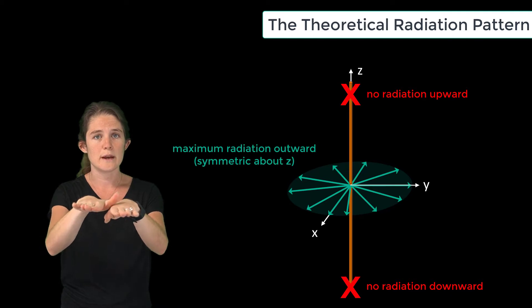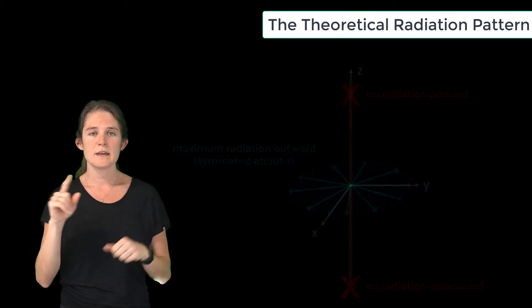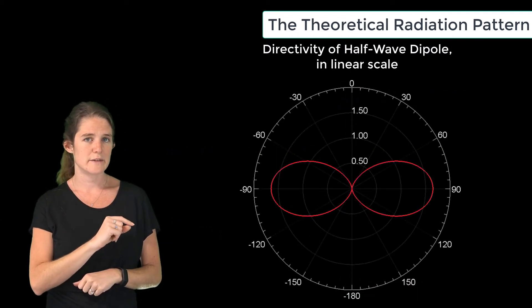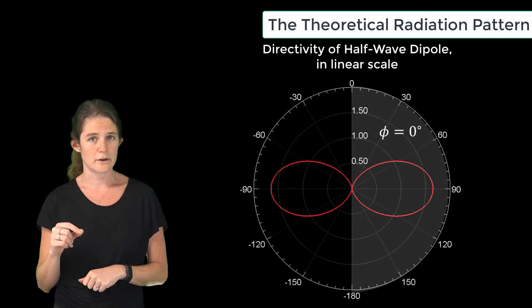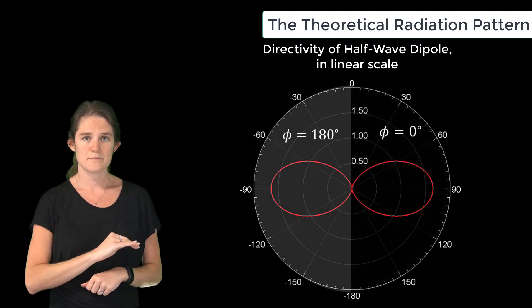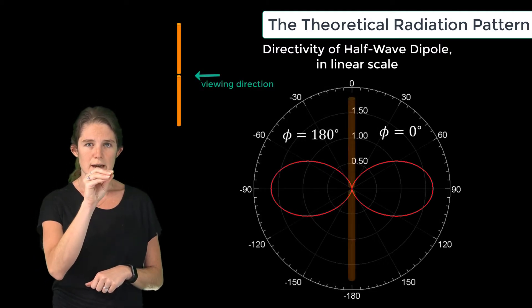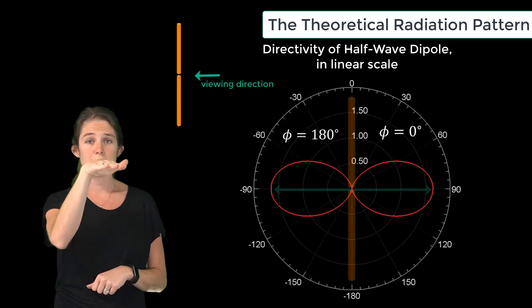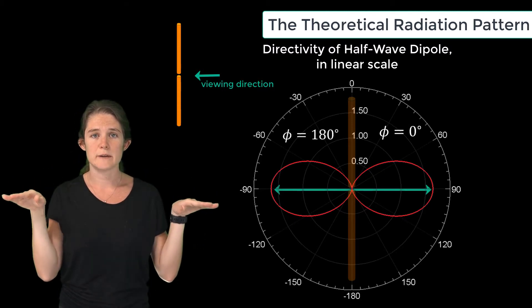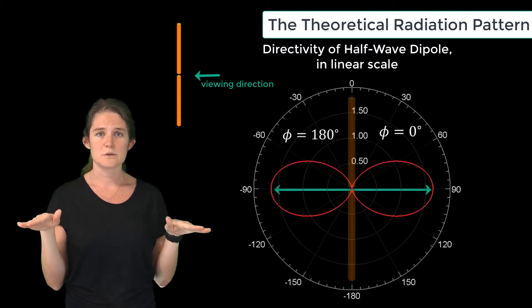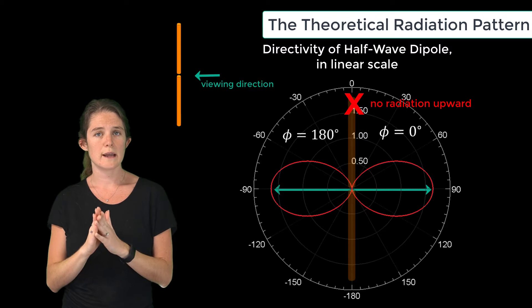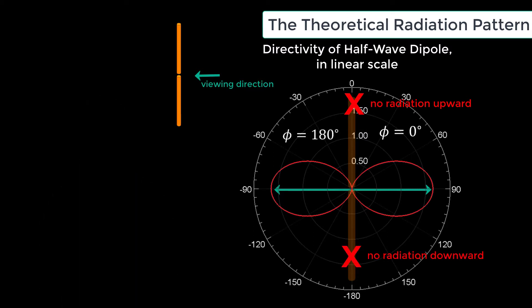This is a graph of antenna directivity on the plane phi equals zero and phi equals 180, so this is as though we were looking at the antenna from somewhere on the XY plane. You can see that radiation is broadside from the antenna outward in the XY plane, and no radiation is going upward or downward.